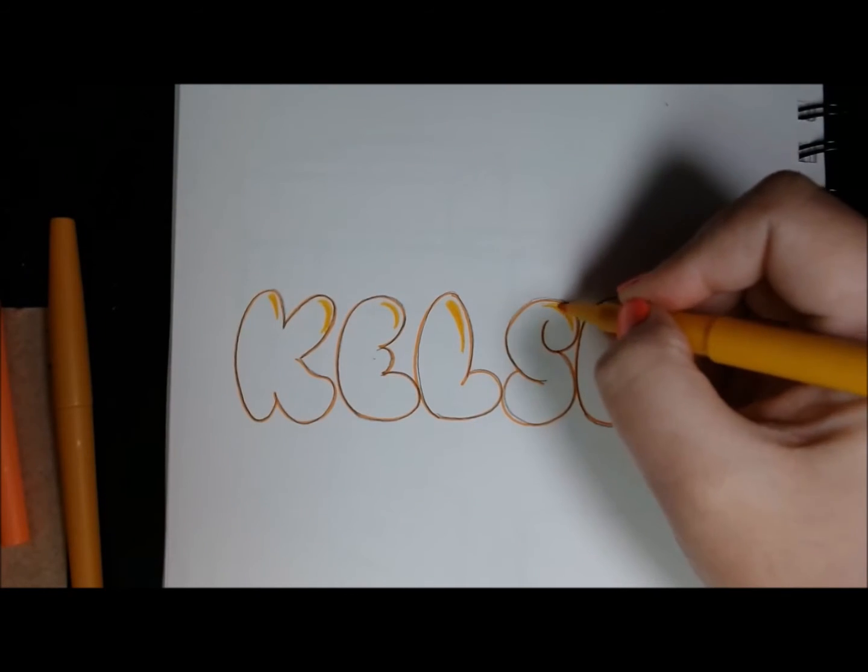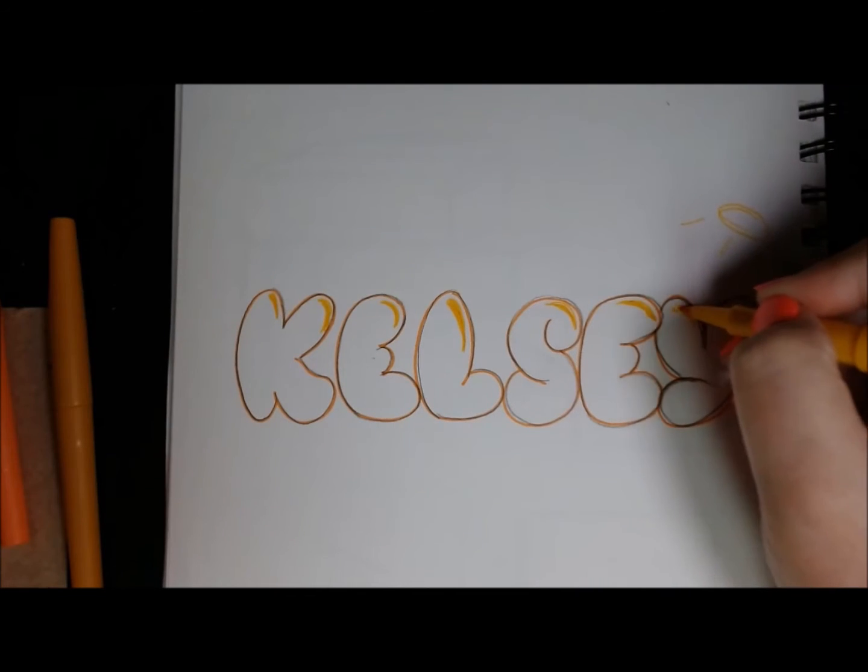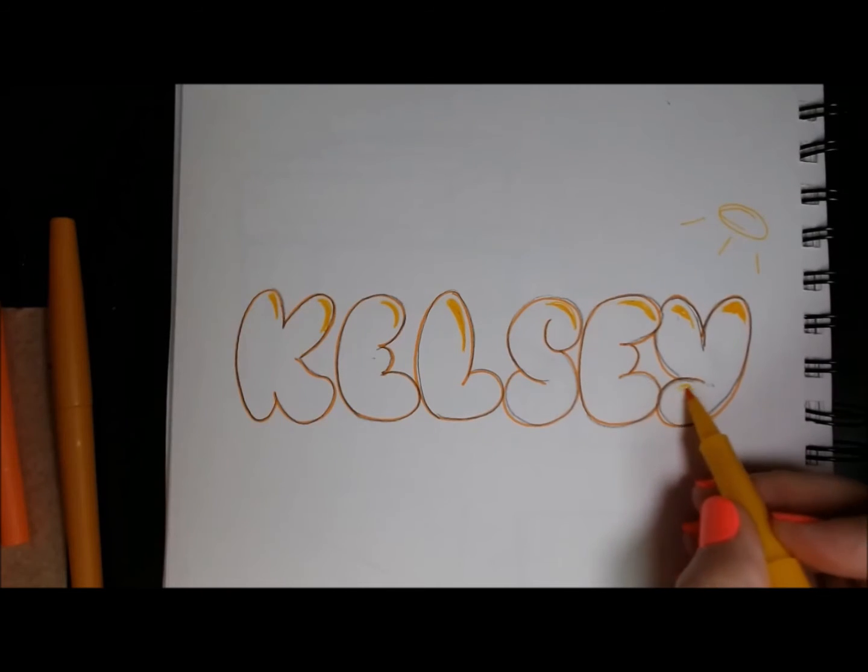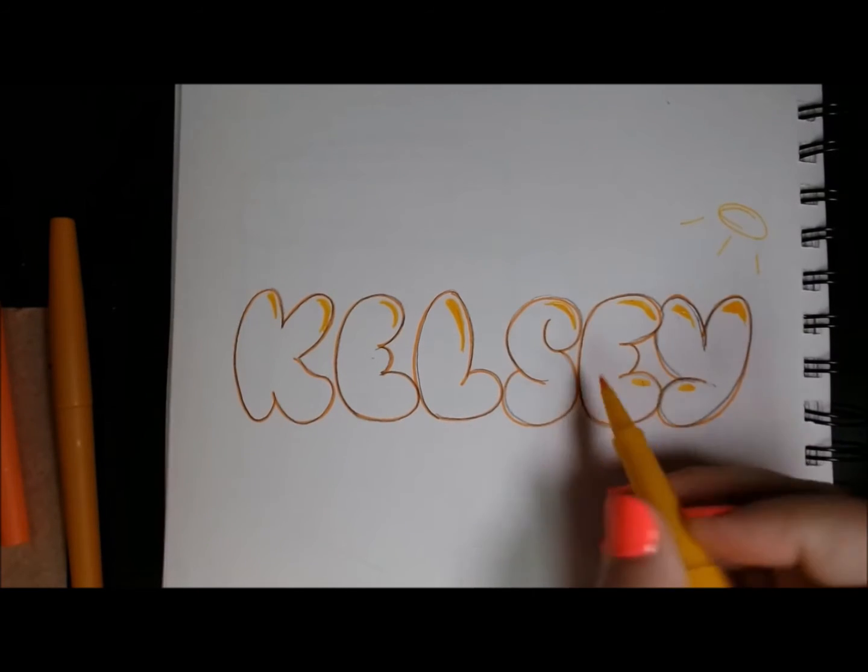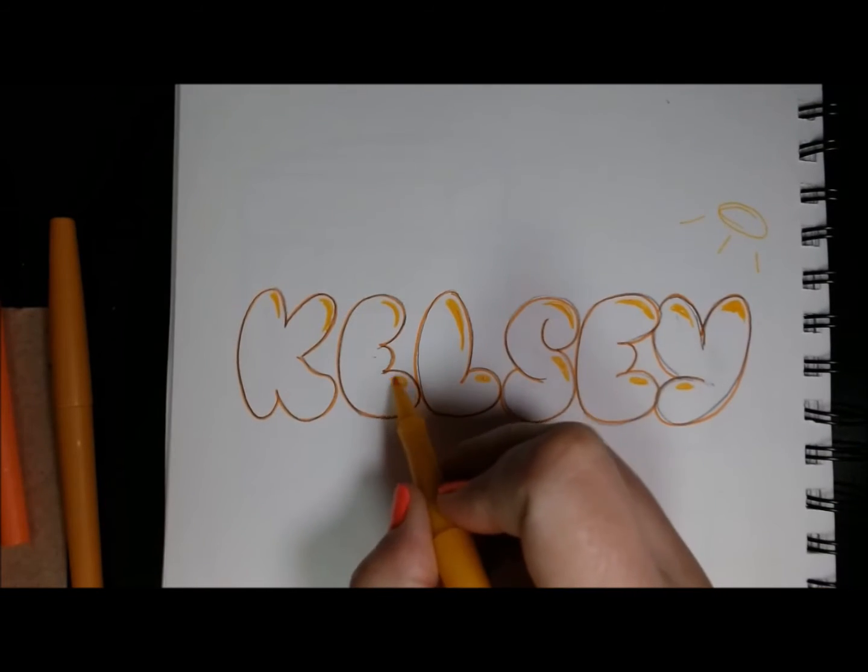So generally, the top of your shine is going to be the widest and then it'll just kind of taper down. Don't forget any other parts that kind of stick out there. You're going to have a little bit of shine mark there.